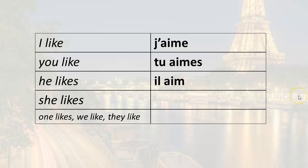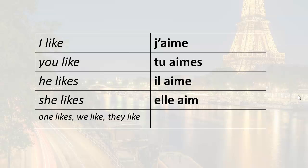He likes — what is the ending for he? The ending is -e. So il aime. She likes — what is the ending for she? It's the same as il: il and elle share the same ending. Il aime, elle aime. And on means one likes, we like, they like, or you like — but we're not pointing at a particular person, just using it in general. The ending is also -e, so on aime.